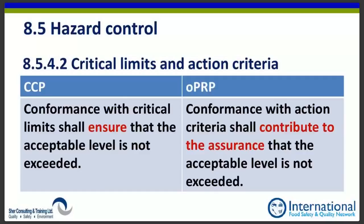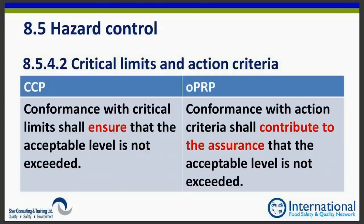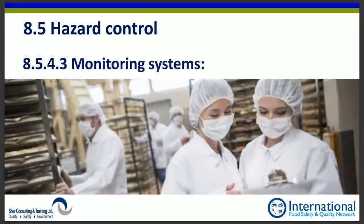Regarding critical limits and action criteria: for CCPs, conformance with critical limits shall ensure that the acceptable level is not exceeded. For OPRPs, the wording in clause 8.5.4.2 states that conformance with action criteria shall 'contribute to the assurance' — not 'ensure' — that the acceptable level is not exceeded. I strongly dislike this distinction and encourage practitioners to disregard it in practice, holding OPRPs to the same standard as CCPs.